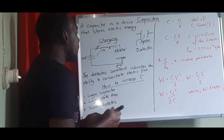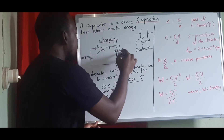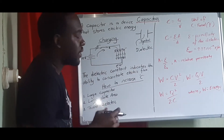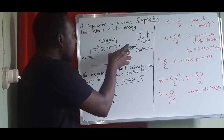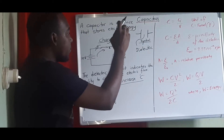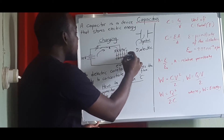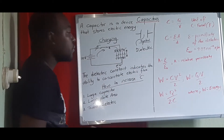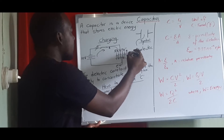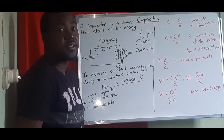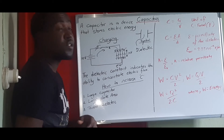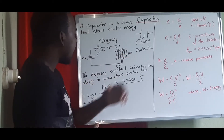This process continues until an electric field is built up here. Because one side is positive and one side is negative, the electric field is being built up, and this electric field is what stores the charges inside the dielectric space. Once the voltage reaches the same voltage as your supply — in this case 10V — the capacitor is fully charged.